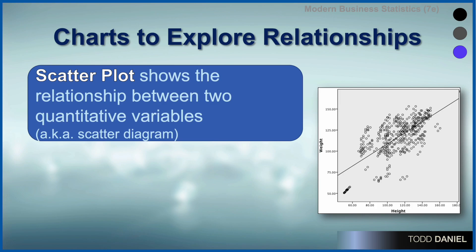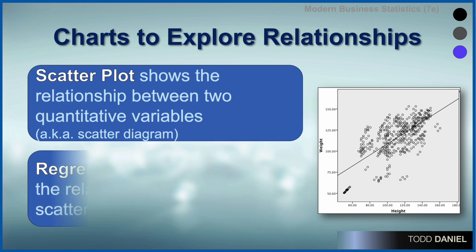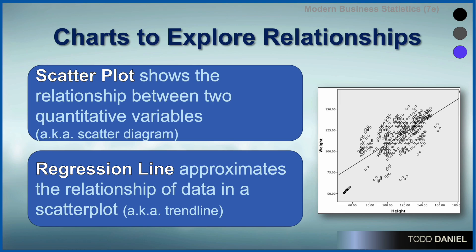To explore relationships between scale-level variables, you can use a scatter plot, which shows the relationship between two quantitative variables. It's also called a scatter diagram. When you create your scatter diagram, you should include a trend line or regression line to approximate the relationship of the data. This more clearly shows the relationship, and it can be used for prediction, which we will learn about later as we discover regression.